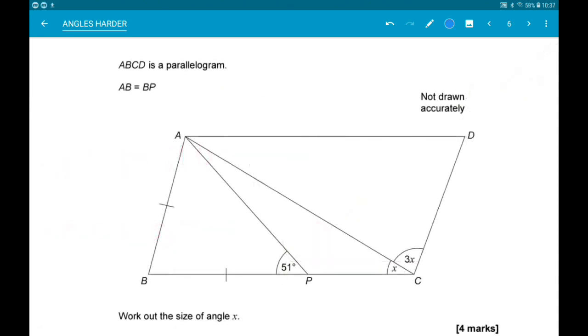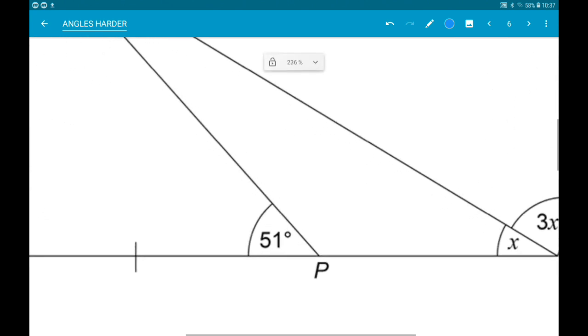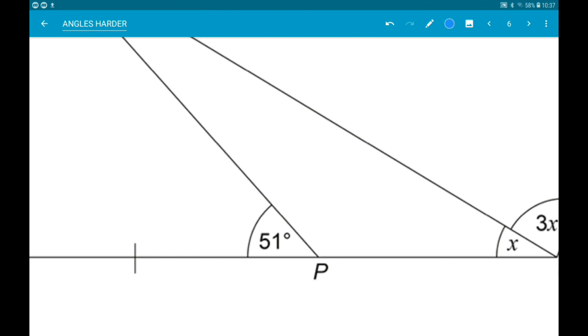Okay, next up we have another parallelogram and AB is equal to BP. So on the left we have an isosceles triangle and our job is to work out the size of angle x. Okay, so there's a few things we can do with this 51 degree angle. So because angles on a straight line add up to 180, we can work out this blue angle.